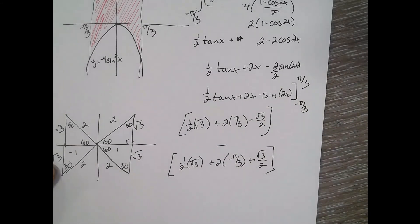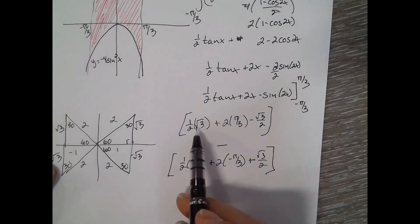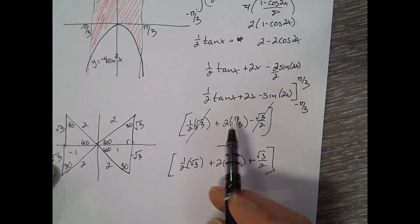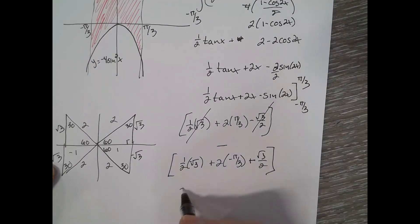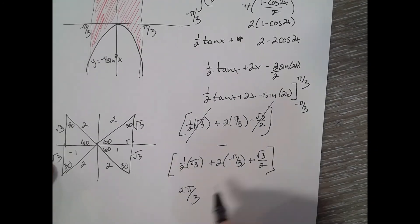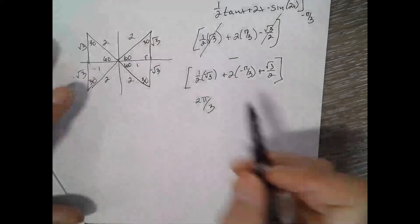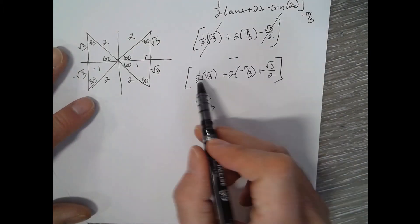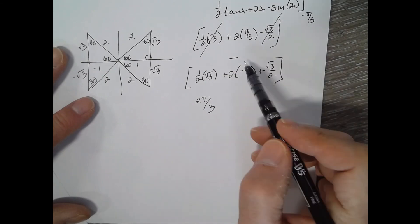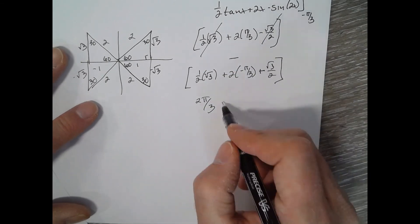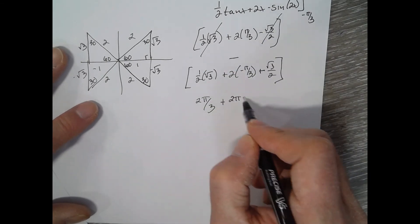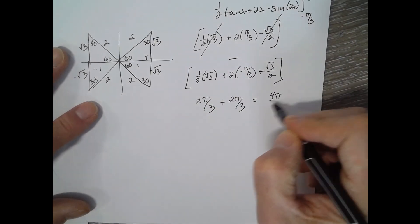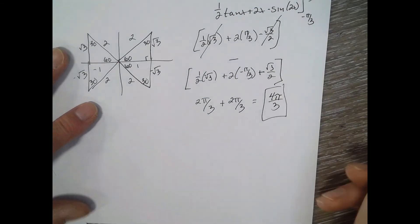Now simplifying: square root of 3 over 2 minus square root of 3 over 2 cancels. The 2pi over 3 from the upper bound, minus a negative 2pi over 3 from the lower bound, gives plus 2pi over 3. So the total is 2pi over 3 plus 2pi over 3, giving 4pi over 3 for the area of the shaded region.